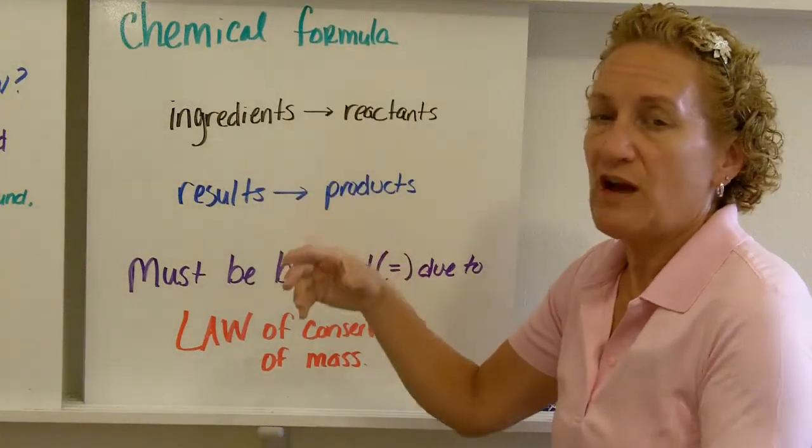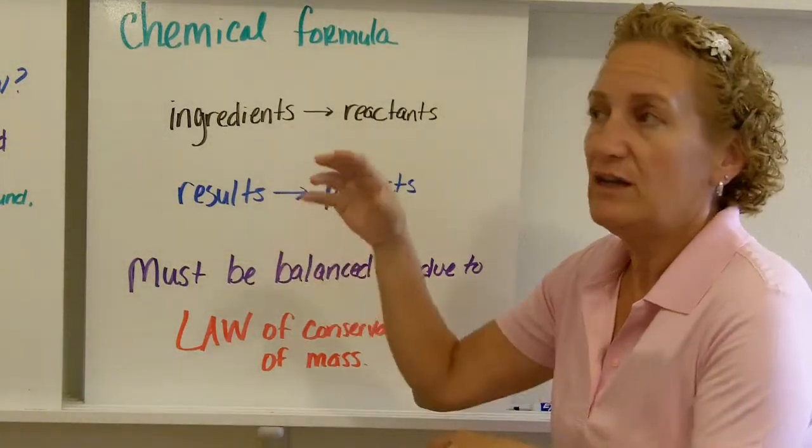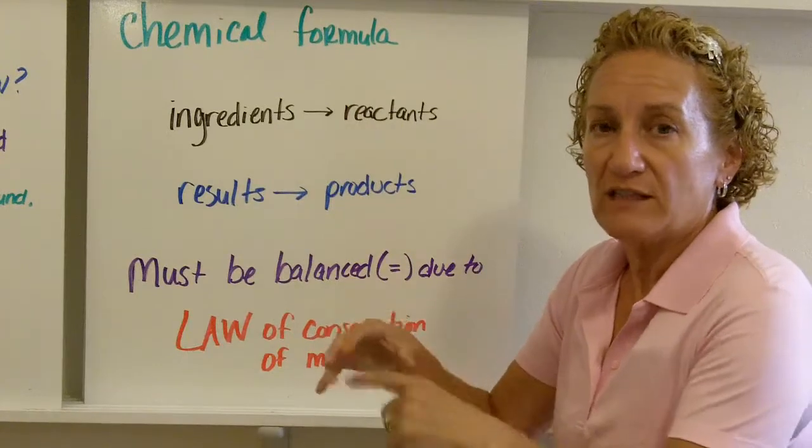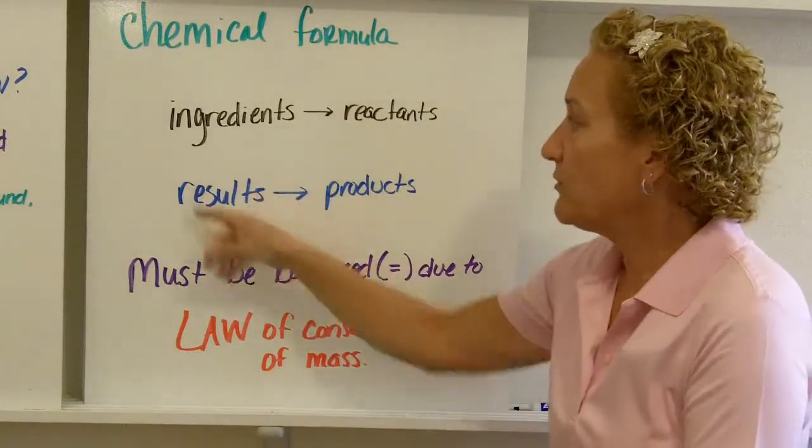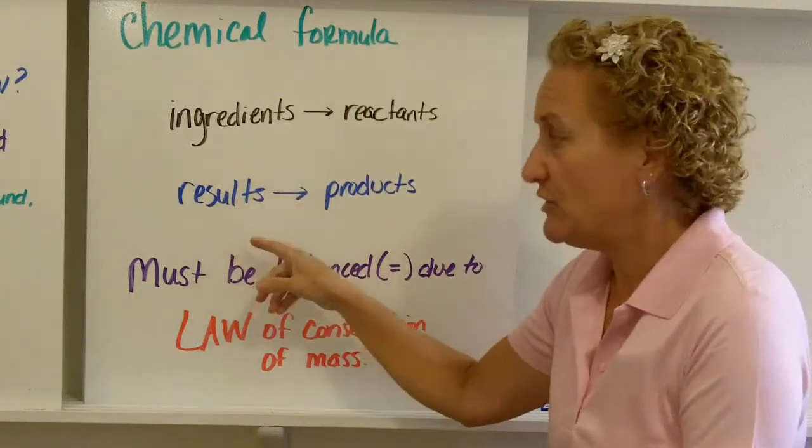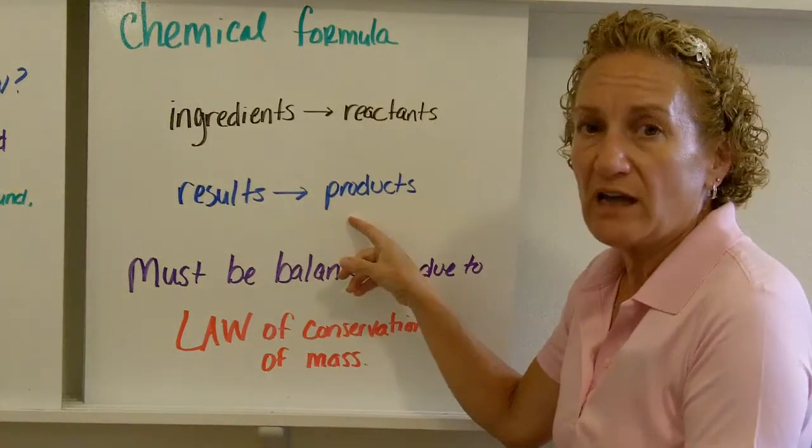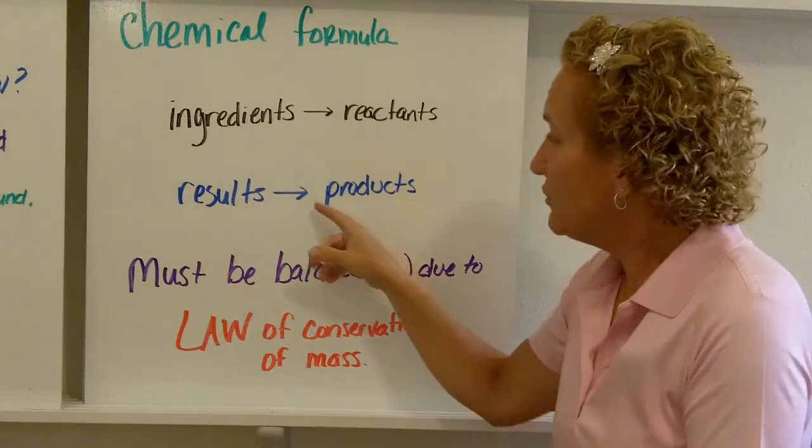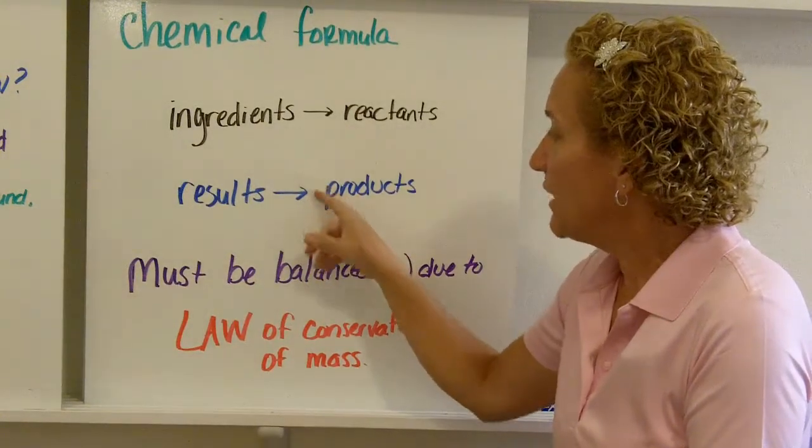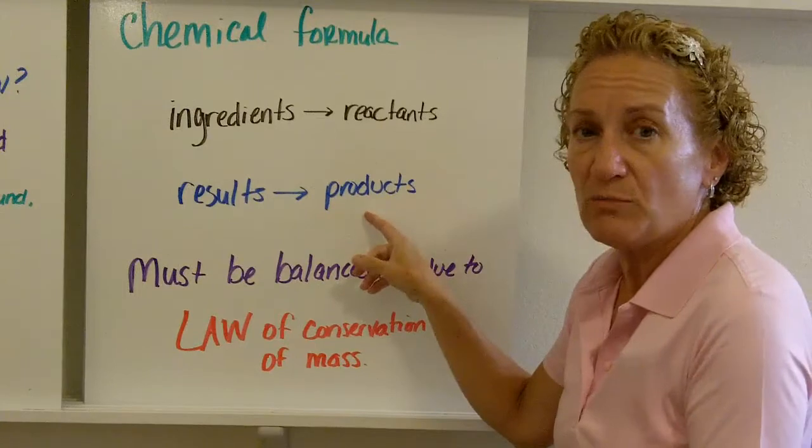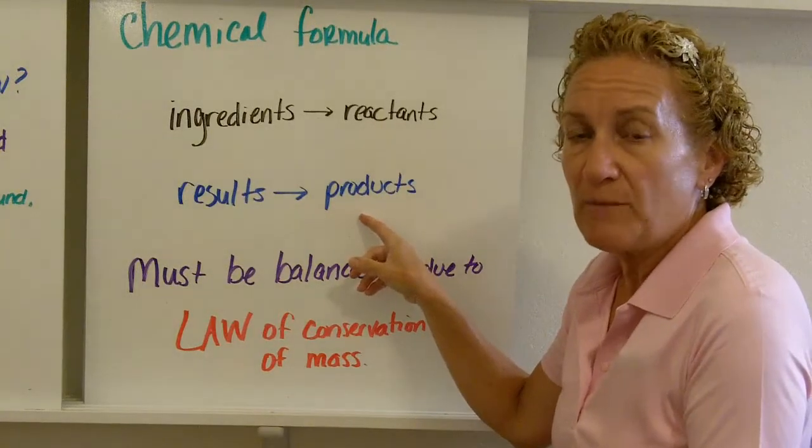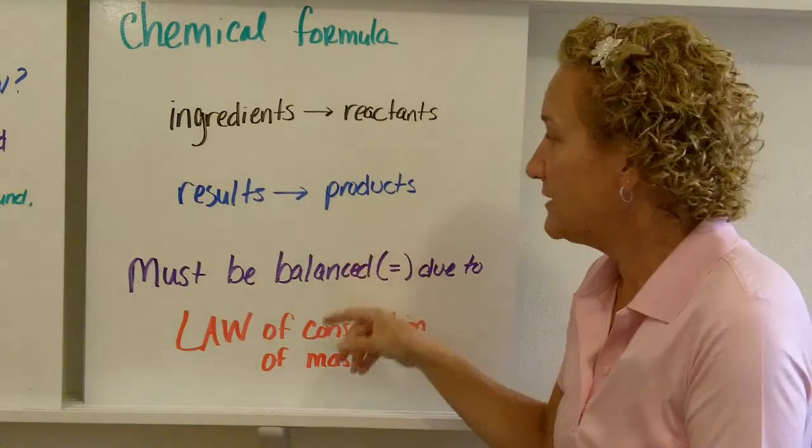If you make chocolate chip cookies, it would be the flour and the eggs and the vanilla and the sugar and the chocolate chips and all that stuff. Those are your ingredients. The results are what you have when you're done, like chocolate chip cookies. The results are called the products. And that's always at the tip of the arrow. So whichever direction the arrow points, the arrow always points to the products. Not always left to right, but the arrow always points to the products.